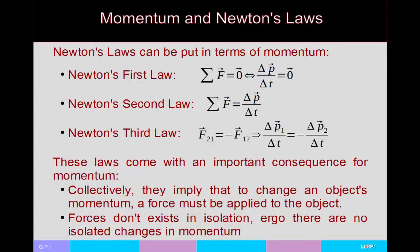Newton's laws can be reformulated in terms of momentum. Newton's first law is more properly stated: if the sum of forces is zero, then the change in momentum is also zero. Newton's second law: if the net force is not zero, then the net force equals the rate of change in momentum — the change in momentum per unit time. Newton's third law implies that forces don't exist in isolation — every change in momentum per unit time comes with a second change in equal magnitude and opposite direction. So there are no isolated changes in momentum.